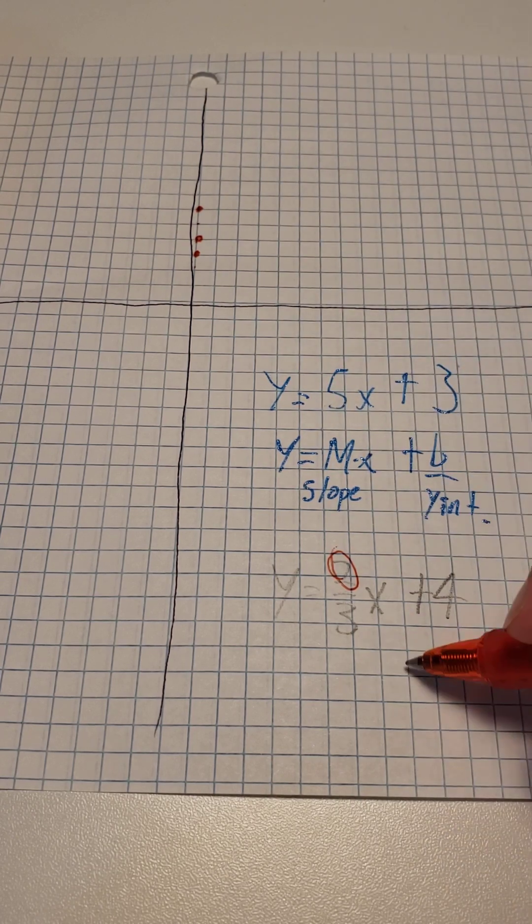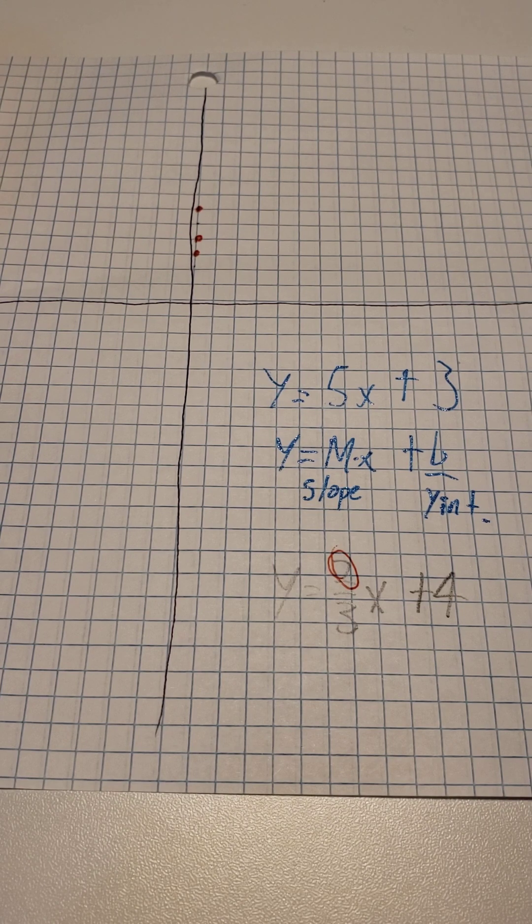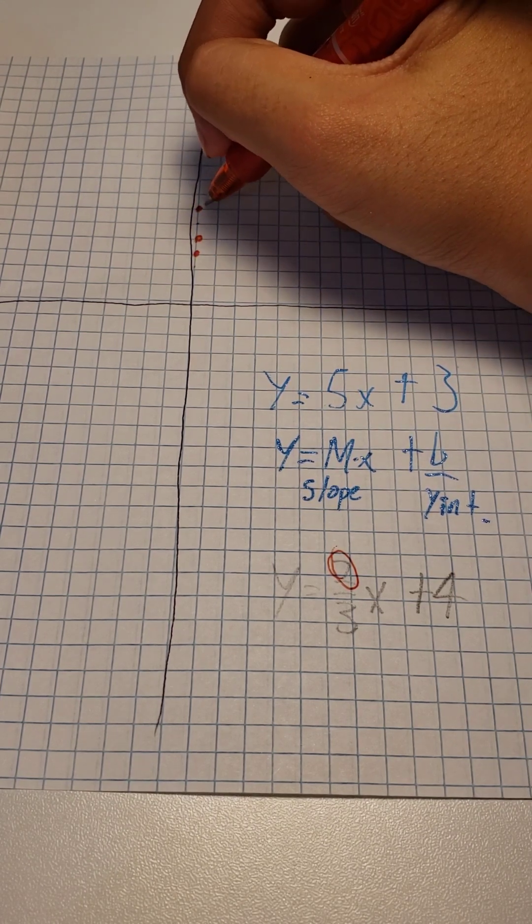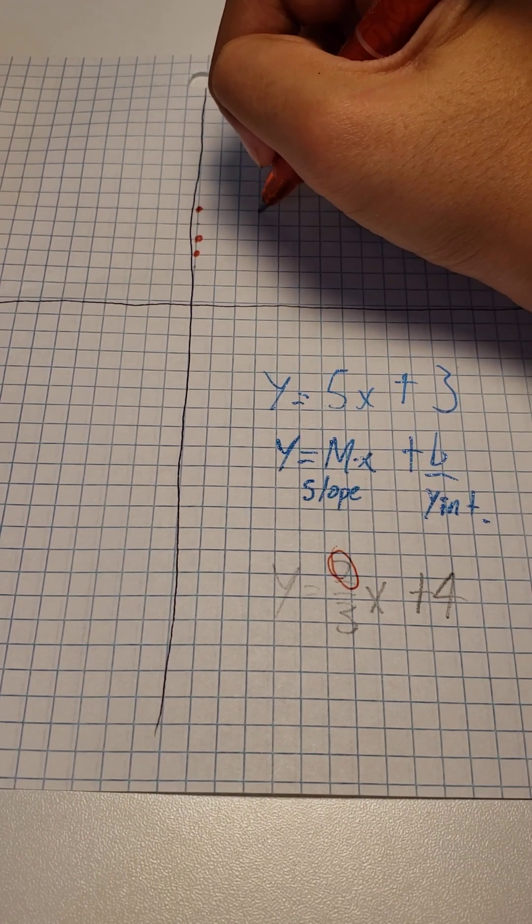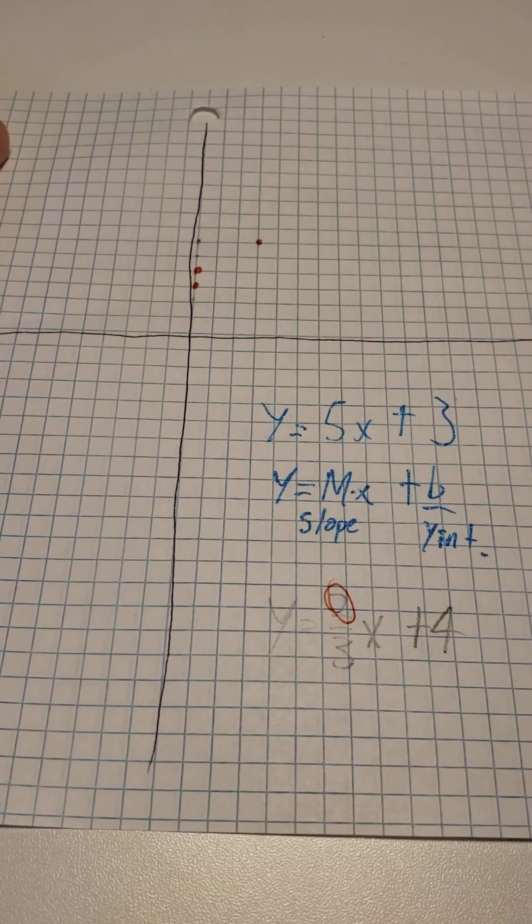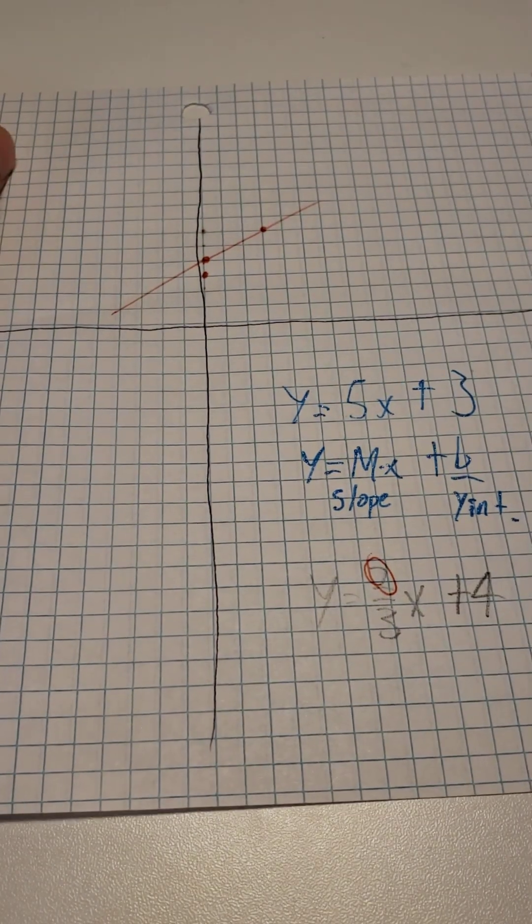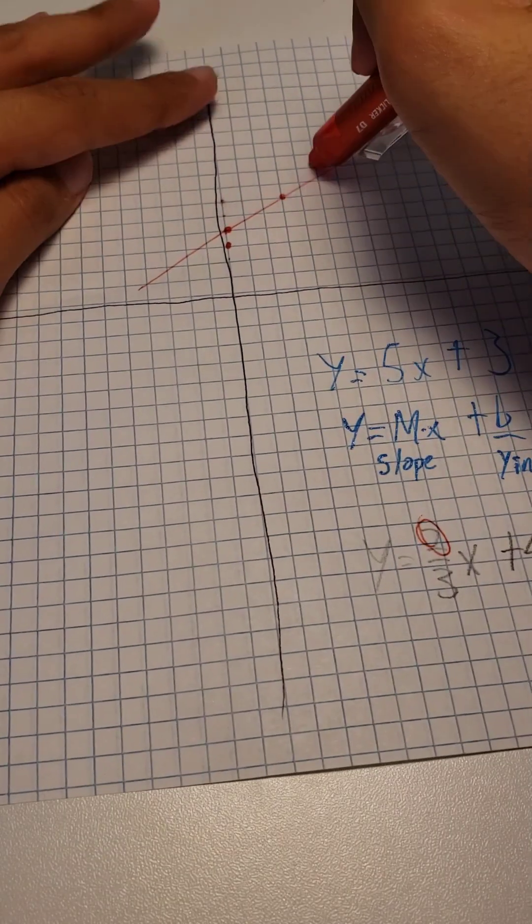And then 3 will be right or left, based on if the number is negative or positive. So let's go 1, 2, 3. Remove this little point. And then we have a beautiful little line. Yippee-ki-yay.